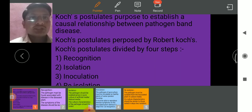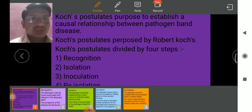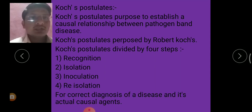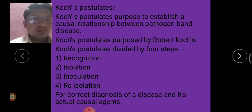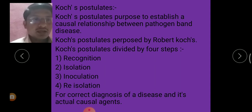Koch's Postulates are divided by four steps: recognition, isolation, inoculation, and re-isolation. Koch's Postulates are used for correct diagnosis of diseases and their actual causal agent.